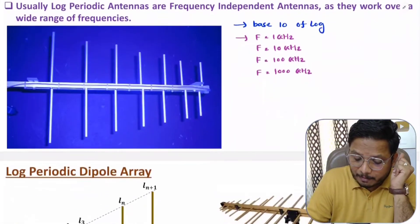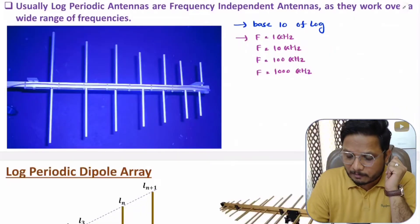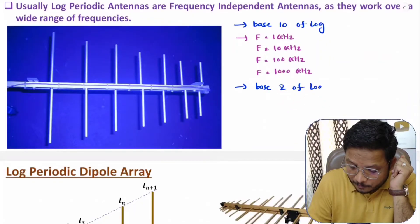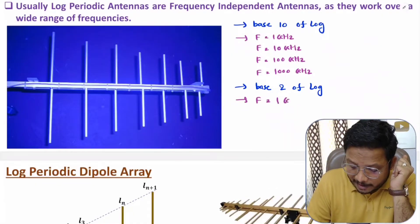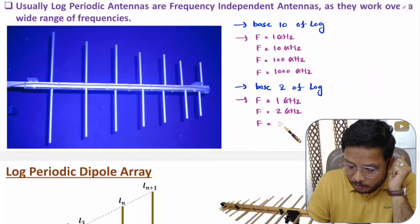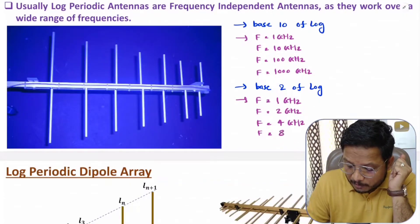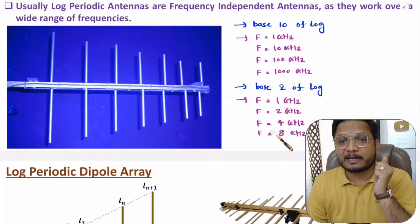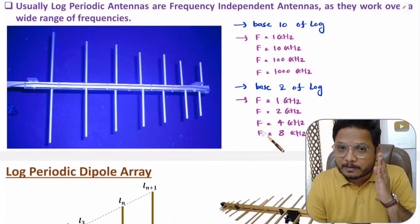Let me take another example with base-2 log. Assume the antenna is operating at 1 GHz. Its radiation characteristics will repeat at 2 to the power 1, which is 2 GHz, then at 2 to the power 2, which is 4 GHz, and then at 2 to the power 3, which is 8 GHz. That is how the radiation characteristics repeat periodically as a logarithmic function of frequency.